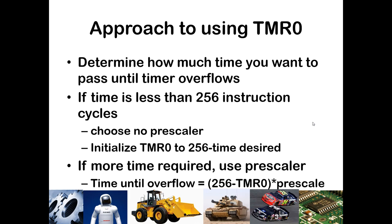For example, if you want a timer for 10 instruction cycles, set TMR0 to 246 with no prescaler. It will increment from 246 to 247, 248, 249, 250, and when it goes from 255 to 256 — rolling back over to zero — the timer expires or overflows. If you want more time than 256 instruction cycles, you need to add a prescaler.